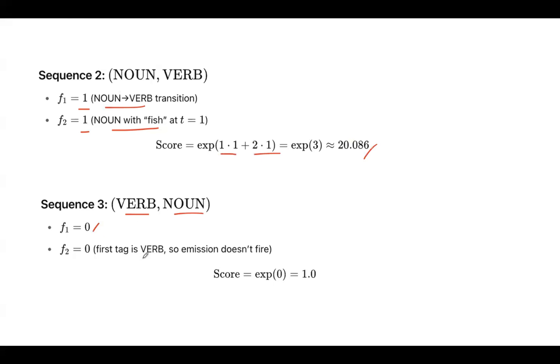And here, the first tag is verb, it is not noun. So you can't find this noun with fish combination also. This f2 also doesn't fire and the value will be 0 only. As both values are 0, your score is exponent of 0 which is 1.